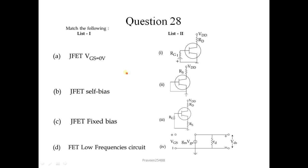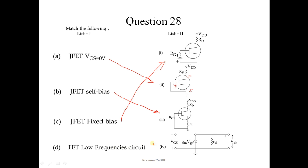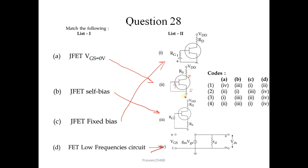Question number 28 - match the following. For JFET with VGS = 0V, the circuit is option 2, since the gate-source is short-circuited. For JFET self-bias, the circuit is option 3. For JFET fixed bias, it is option 1. For FET low-frequency circuit, it is option 4. So the correct sequence is 2-3-1-4, and the correct answer is option 4.